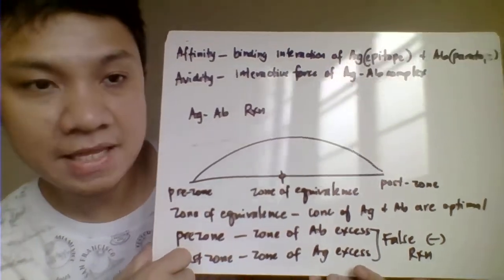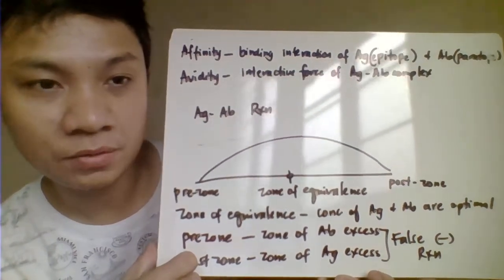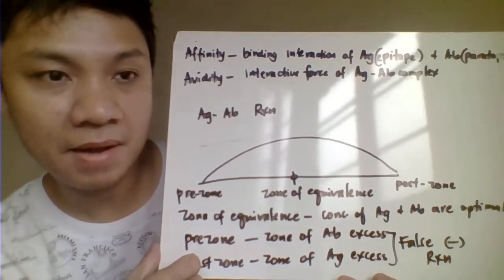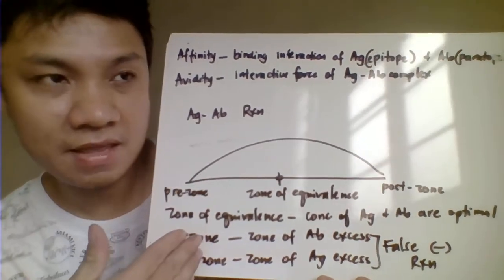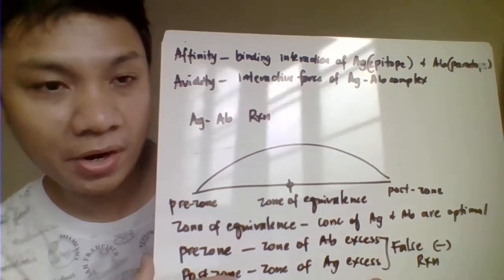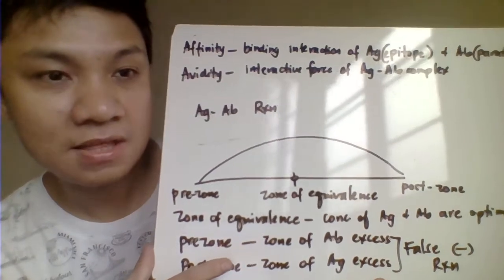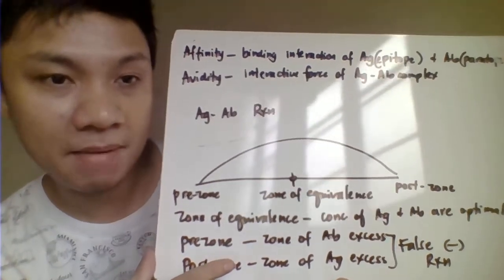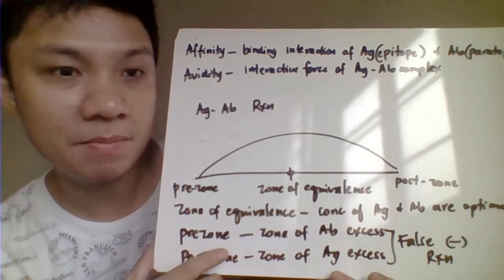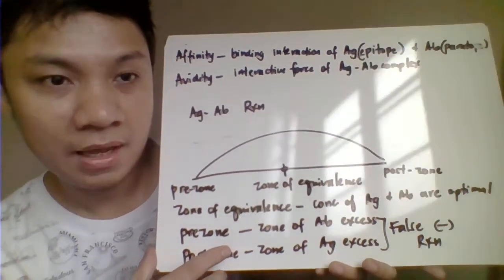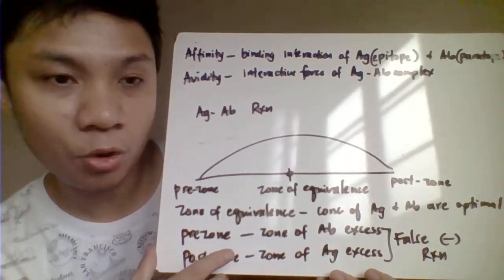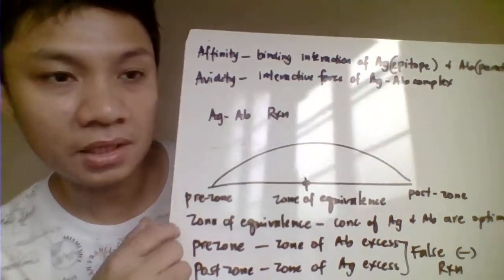Affinity is the interactive binding force that drives the antigen to bind with the antibody. The antigen has an epitope and the antibody has its binding site; when these two bind, that interaction is called affinity — essentially the force of attraction between them. Avidity is the total sum of the antigen-antibody complex interactions.